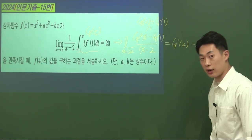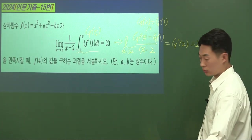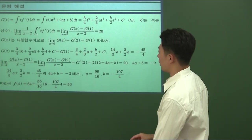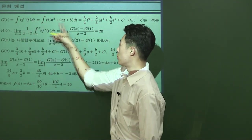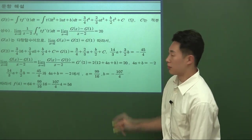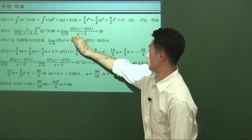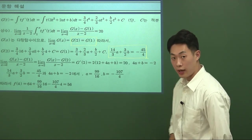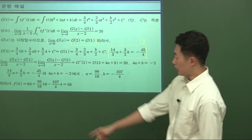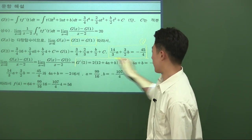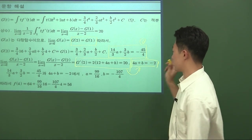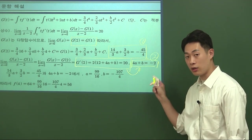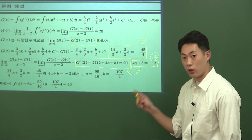S₃에서 S₂를 뺀 값은 일반항 a₃가 되고, a₃의 제곱이 75입니다. 이를 통해 a₁ = 5라는 값이 나옵니다. 문제에서 요구하는 것은 a₂와 a₈을 서로 곱한 값인데, 이는 a₁의 제곱에 r의 8승이므로, 구한 값들을 대입하면 답이 225가 됩니다.